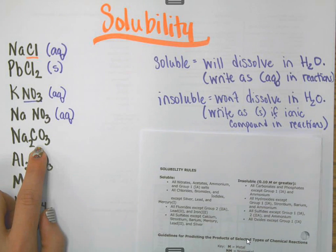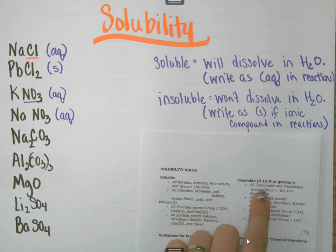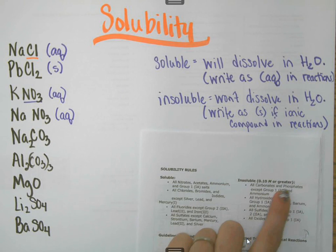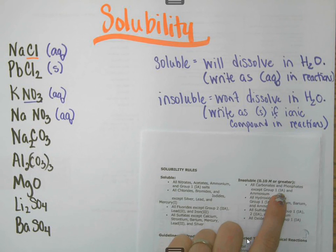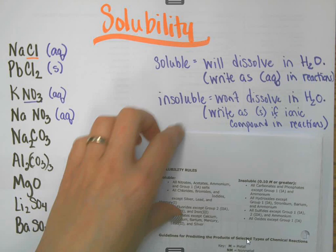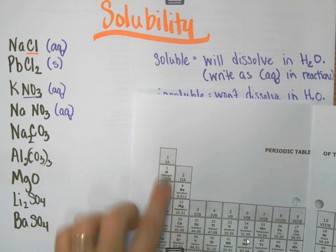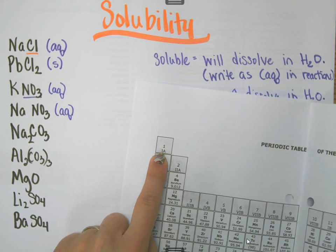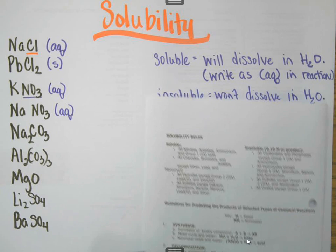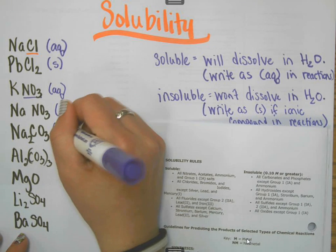Sodium carbonate: carbonates aren't on the soluble side — the carbonates are on the right-hand side. All carbonates and phosphates are insoluble, meaning they won't dissolve in water unless they are combined with a group 1A element. Sodium is a group 1A element, which means that instead of not dissolving, it actually will dissolve, so it will be aqueous.